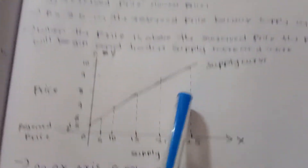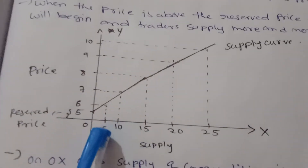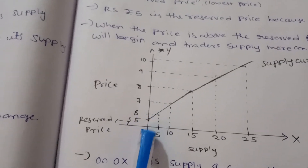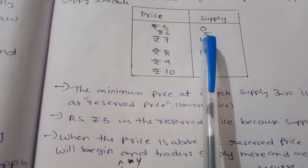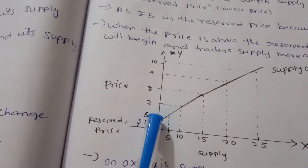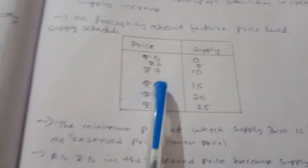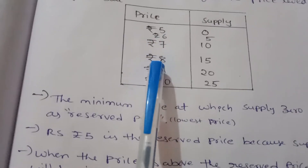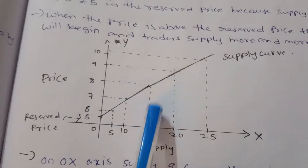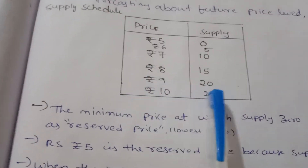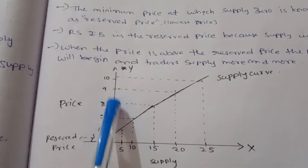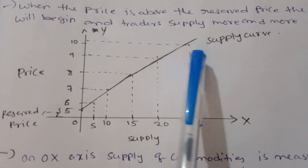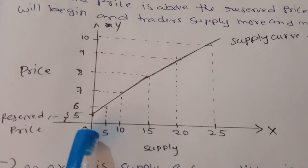This is supply, shown on the OX axis. The supply schedule is: price 0 → supply 5; price 5 → supply 5; price 6 → supply 5; price 7 → supply 10; price 8 → supply 15; price 9 → supply 20; price 10 → supply 25.